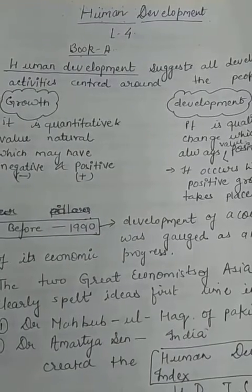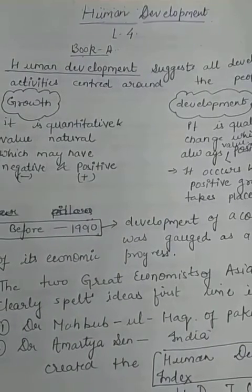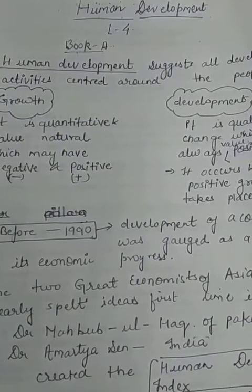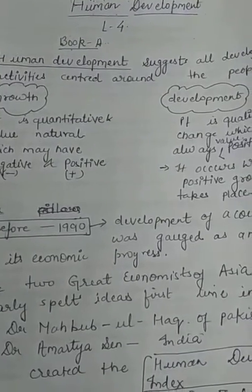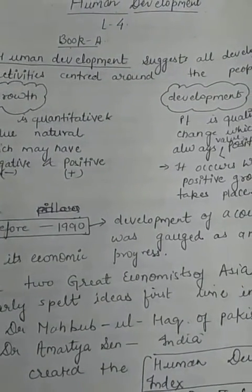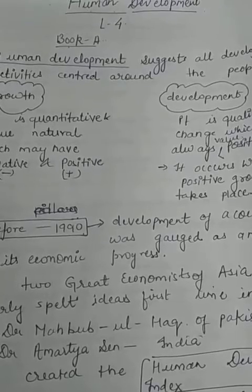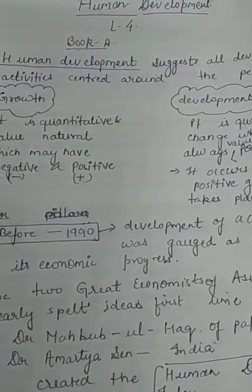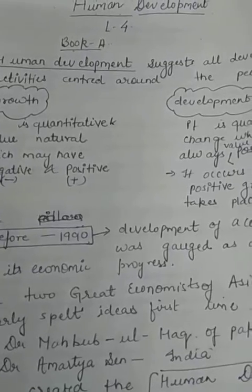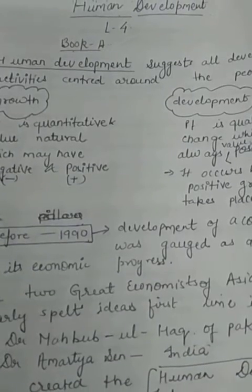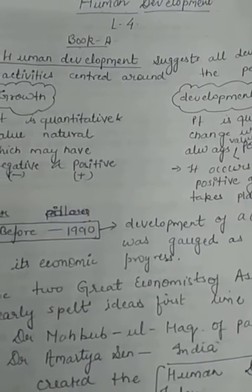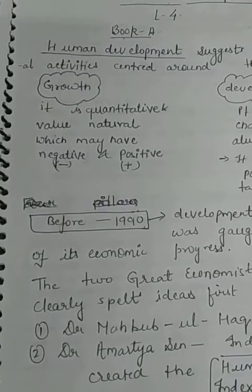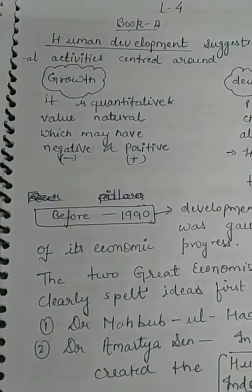Welcome to the geography class. Today we are going to start a new chapter on Human Development from Book A, Lesson 4. We have already covered a similar topic in our previous book — Book B, India: People and Economy — but that was related to India only. Now in this second book, we are going to study this topic as it relates to the whole world.